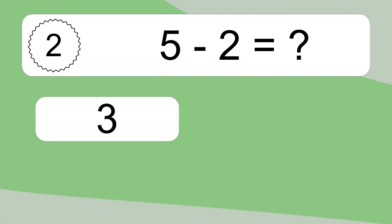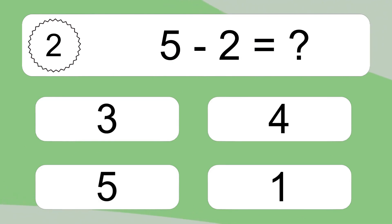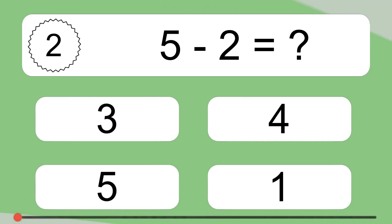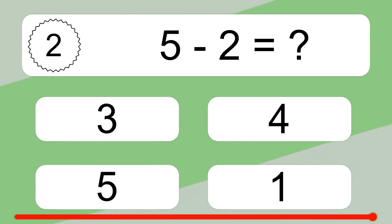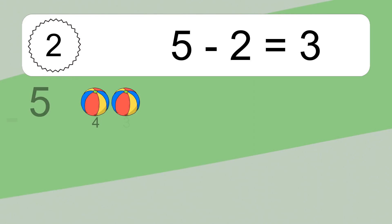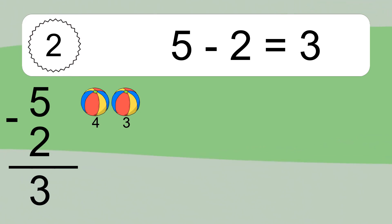5 minus 2 equals what? 5 minus 2 equals 3. Let's count it: 4, 3.